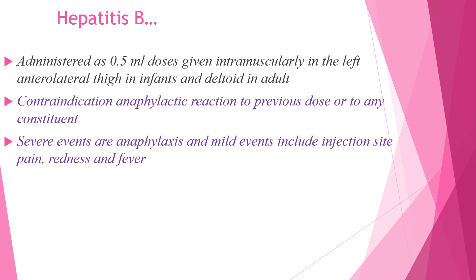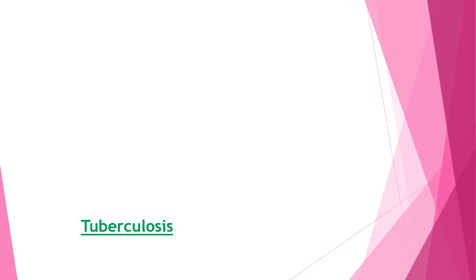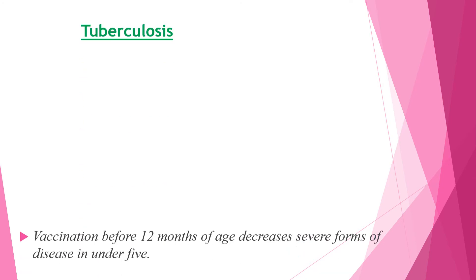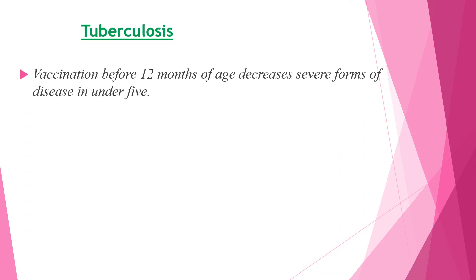The contraindication is anaphylactic reaction to a previous dose or to any constituent. Severe events include anaphylaxis, and mild events include injection site pain, redness, and fever. Tuberculosis vaccination before 12 months of age decreases severe forms of disease in under-five children.